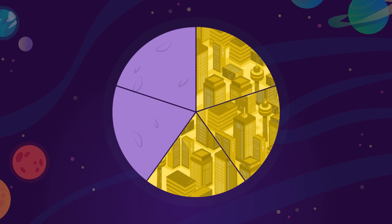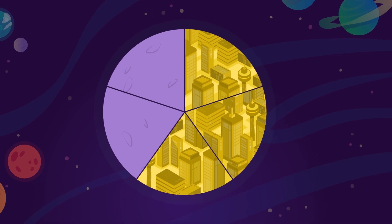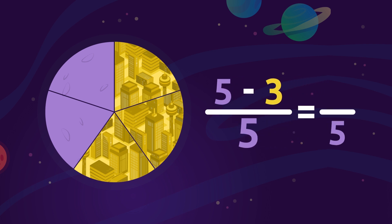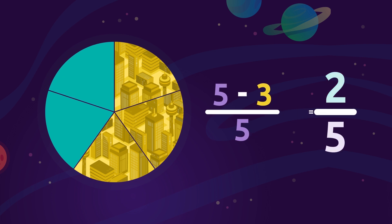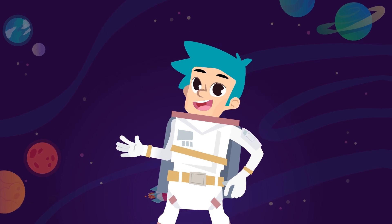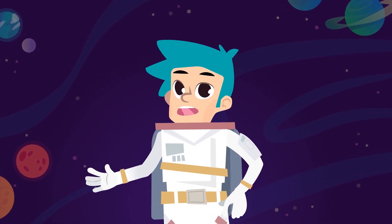To find the solution, we subtract the fractions: five fifths minus three fifths. First, we leave the same denominator — the number 5 — and then we subtract the numerators: 5 minus 3 equals 2. The result is that two parts of planet Learnturn are covered with woods, that is two fifths. Congratulations — now you know how to subtract fractions with the same denominator!